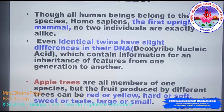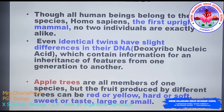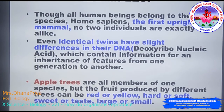DNA stands for Deoxyribonucleic acid, which contains information for the inheritance of features from one generation to another. Even when twins look similar, there will be some DNA modifications. For example, apple trees are all members of one species, but the fruit produced by different trees can be red or yellow, hard or soft, sweet or sour, large or small — these are all characteristic features of the apple based on the apple tree's DNA.